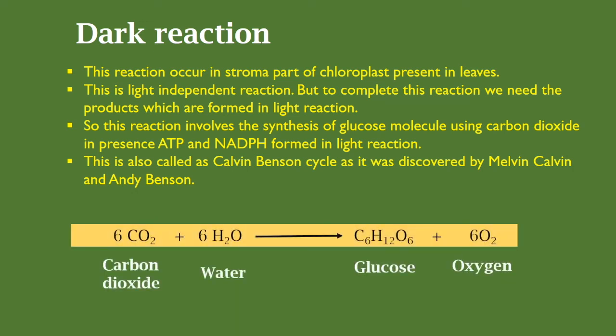The balanced chemical equation for photosynthesis is as follows: 6CO₂ + 6H₂O → C₆H₁₂O₆ + 6O₂.